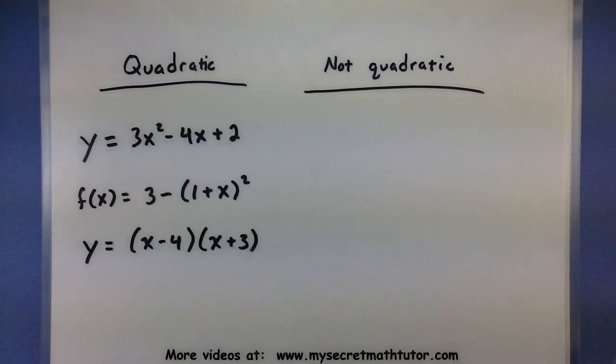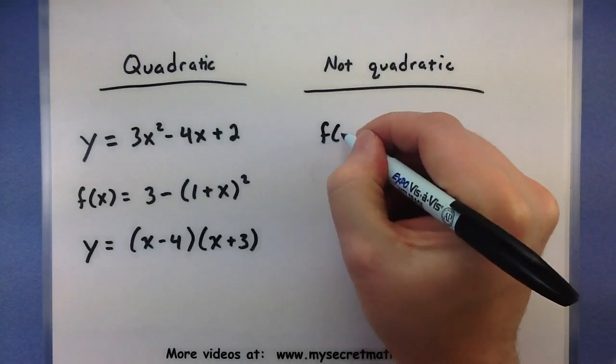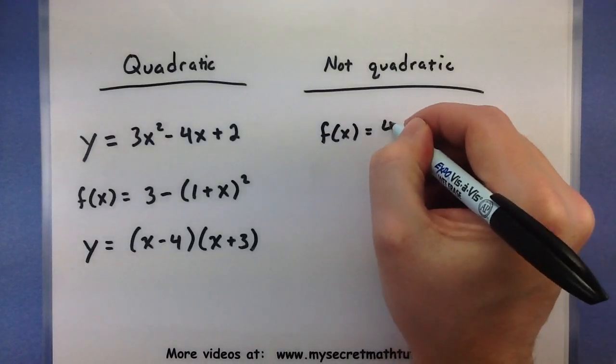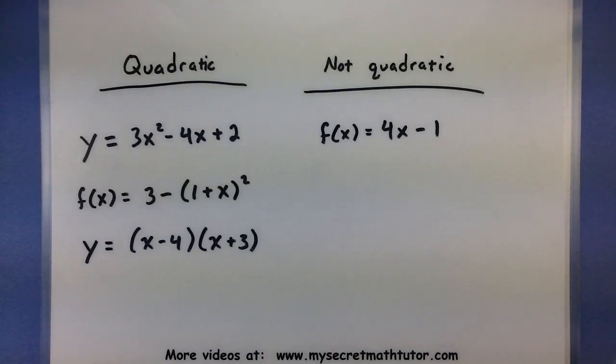Now, go ahead and compare these guys to a few examples that are not quadratic. Now you may recognize this guy as just a line. But the reason why it's not quadratic is because it does not have that x squared, it doesn't have that 2 component.